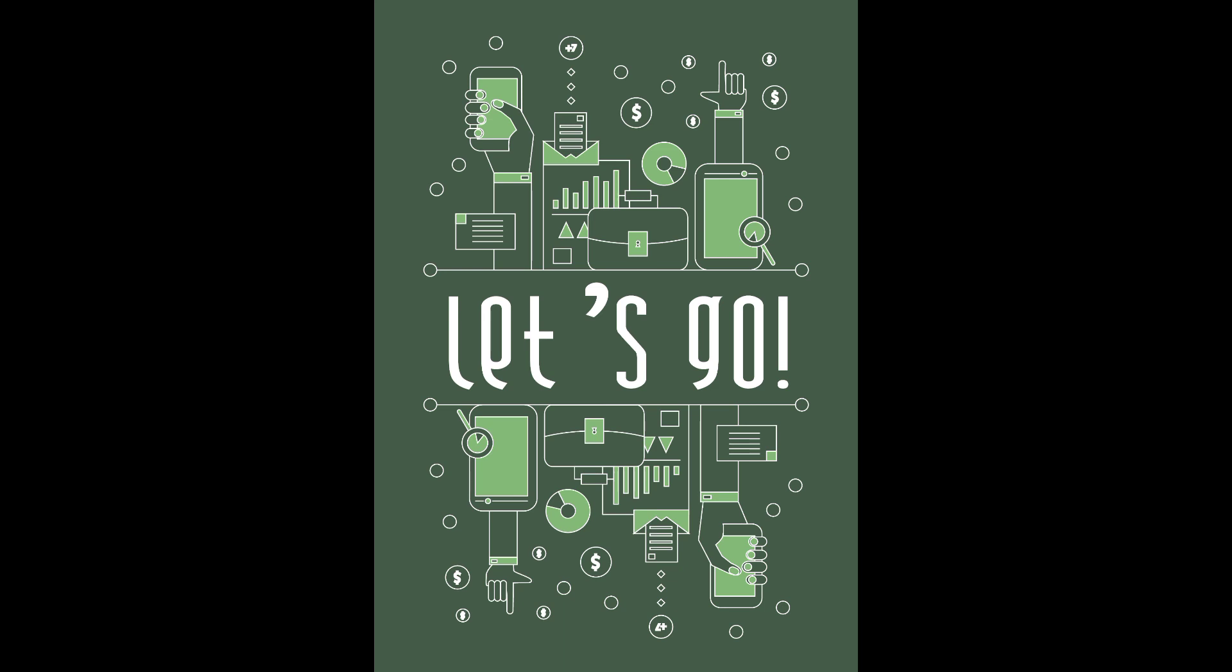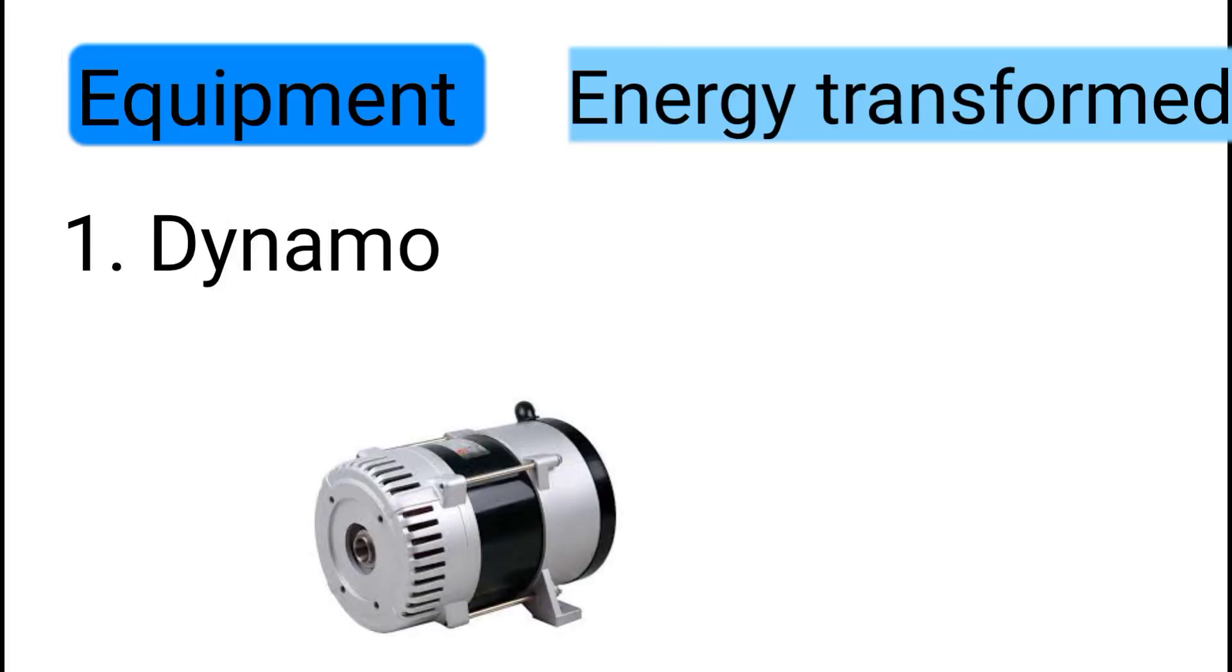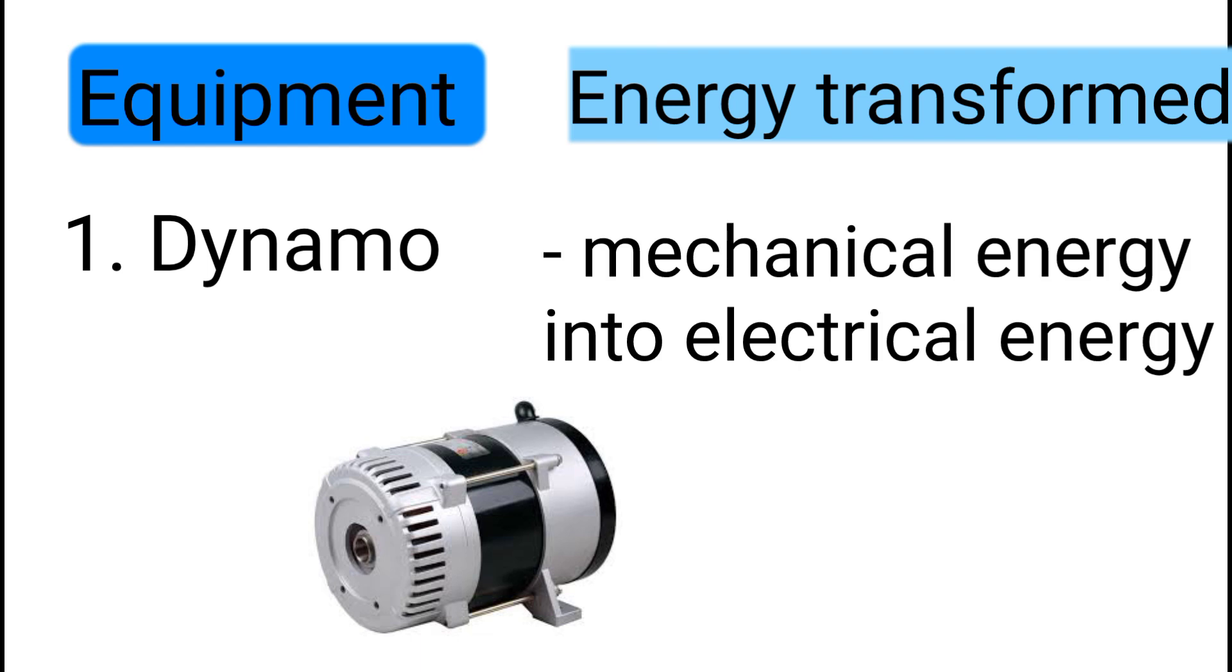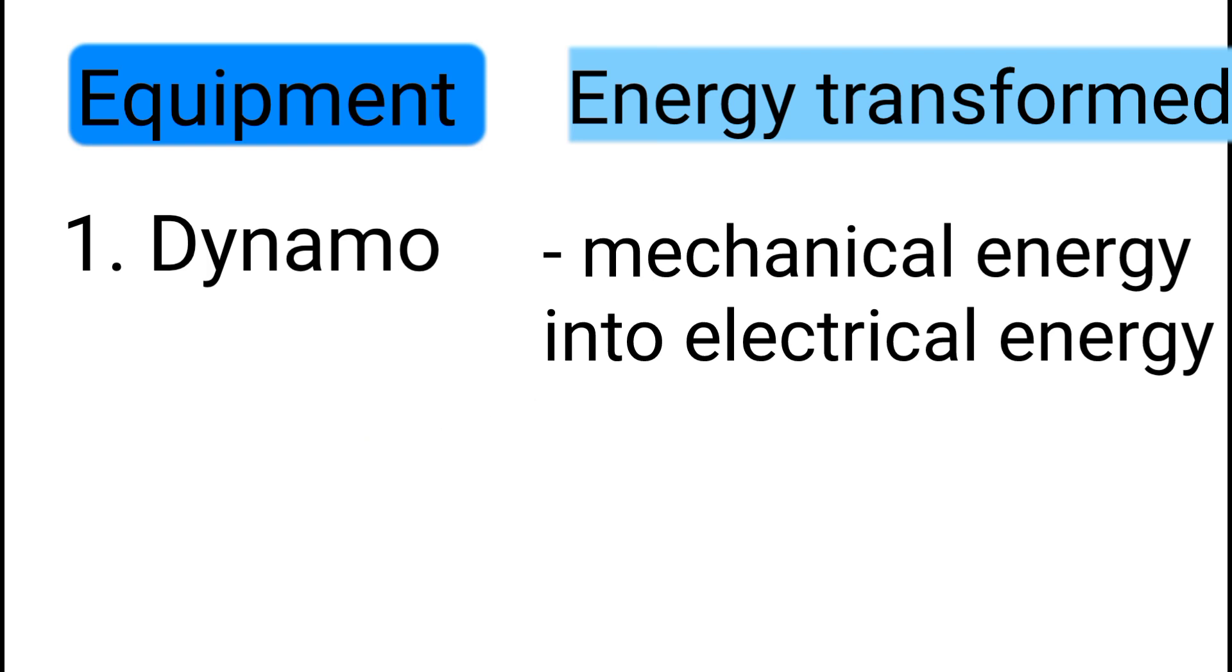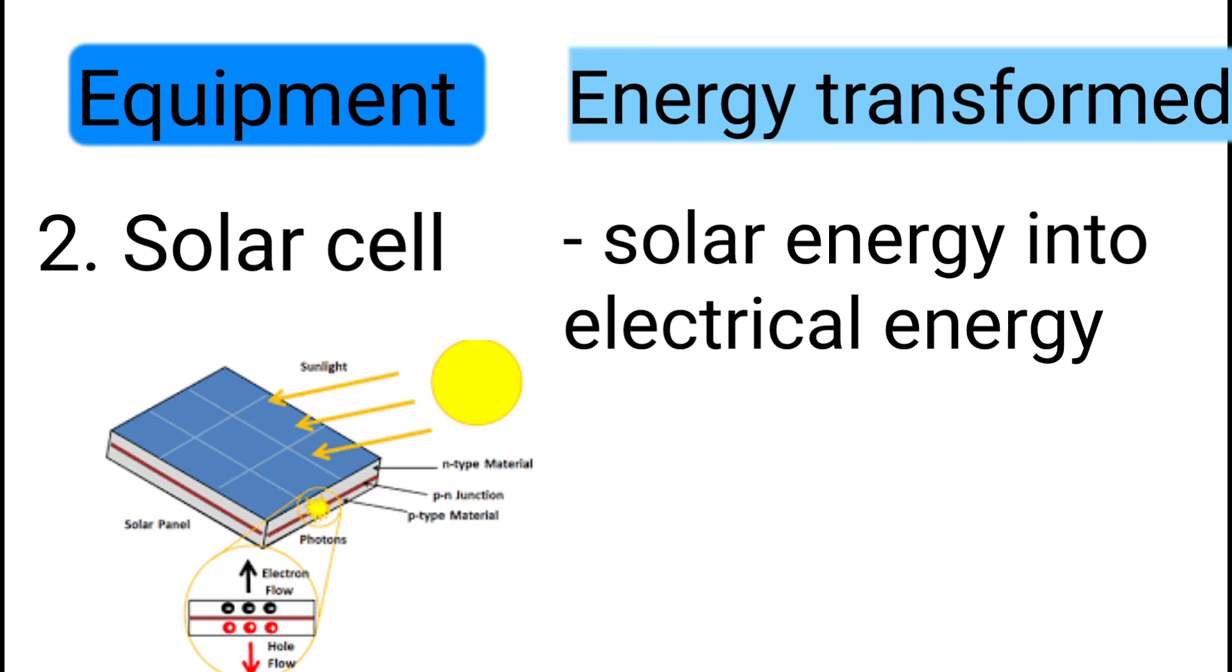Question number one: dynamo is used for mechanical energy into electrical energy. Number two: solar cell transforms solar energy into electrical energy.